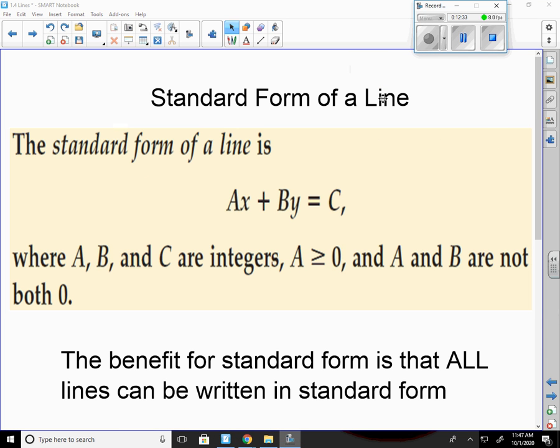Last thing we have here is this standard form of a line. The standard form of a line is ax plus by equals c. A, b, and c are integers, which means they're all whole numbers. A has to be greater than or equal to zero. And a and b are not both zero.